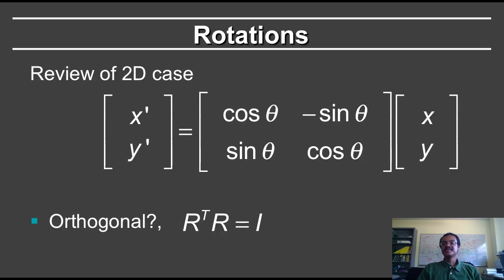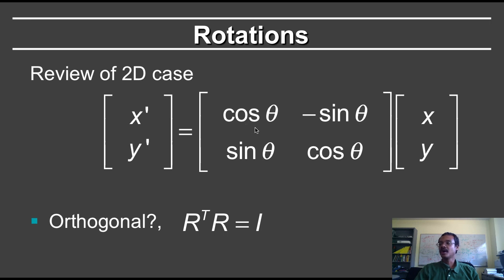First, let's review the 2D case. In that case, we know that the new coordinates x' are given by cosine theta times x minus sine theta times y. Y' is given by sine theta times x plus cosine theta times y.